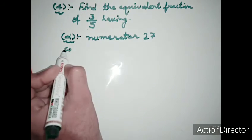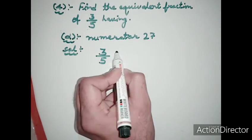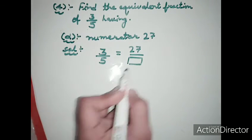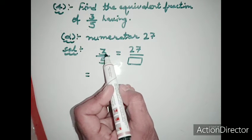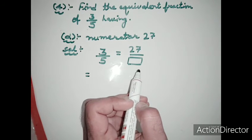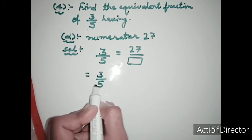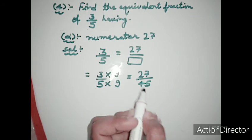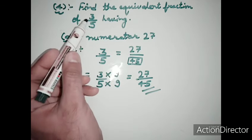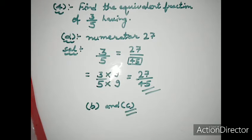For part d: find the equivalent fraction of 3 upon 5 with numerator 27. We divide 27 by 3 to find the multiplier: 27 divided by 3 is 9. So we multiply 3 upon 5 by 9. Three times 9 is 27 and 5 times 9 is 45. The equivalent fraction of 3 upon 5 with numerator 27 is 27 upon 45. Students will solve parts b and c by themselves.